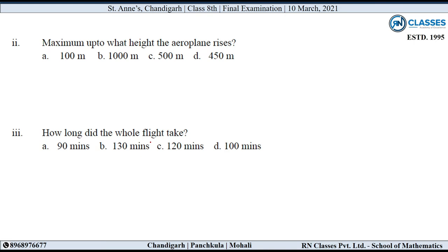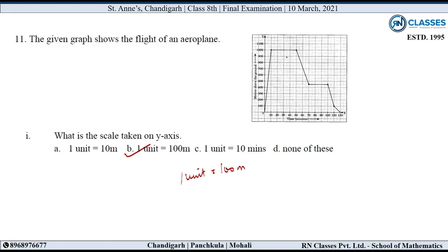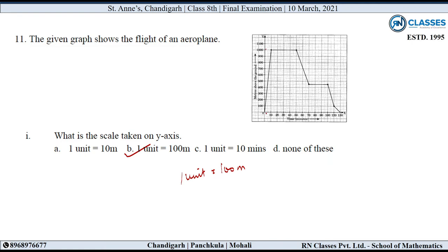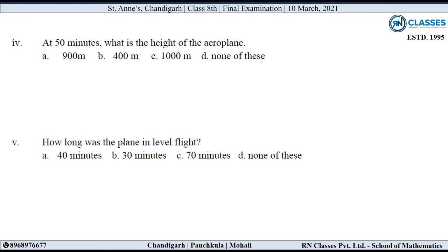Second sub-question: Maximum up to what height does the aeroplane rise? From the graph, the plane starts at 0 and goes up to 130 minutes total. So total time was 130 minutes. So option B is correct.